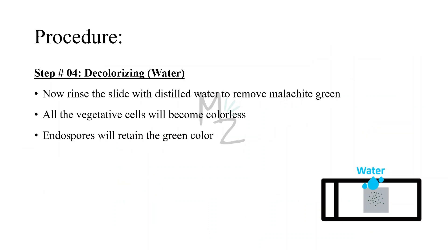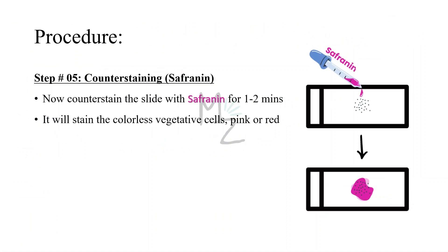Step four is decolorizing. We'll rinse the slide with distilled water to remove malachite green, since it is water soluble. All the vegetative cells will become colorless because they didn't retain the dye, but the endospores did — they are now green colored dots, as you can see. Step five is counter staining: we'll counter stain the slide with safranine for one to two minutes. It will stain all the colorless vegetative cells pink or red. Now endospores appear as green dots while vegetative cells appear pink.